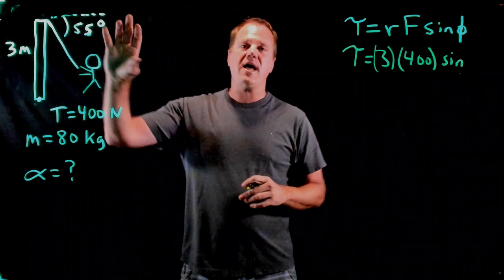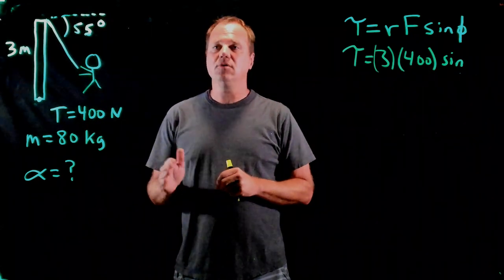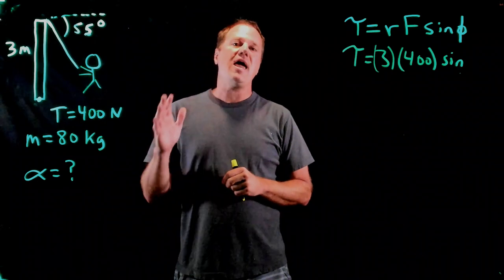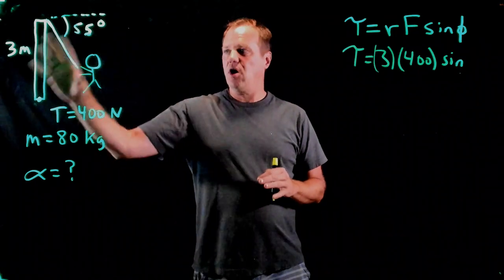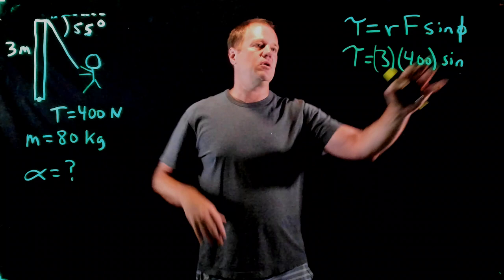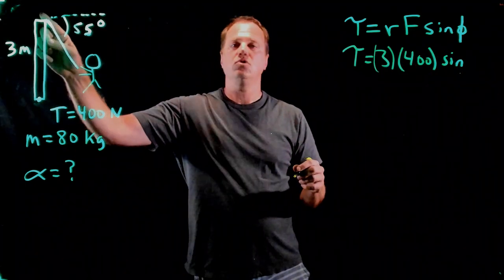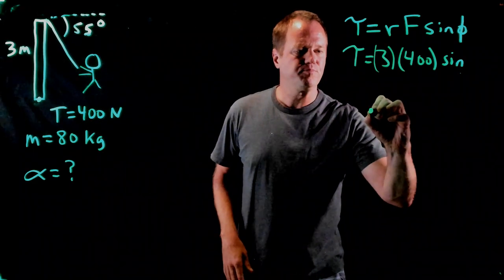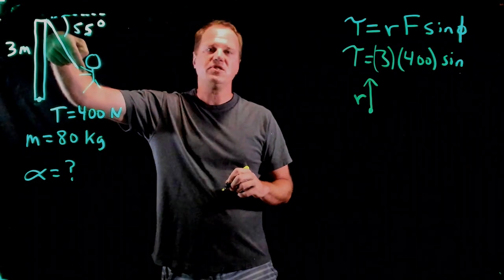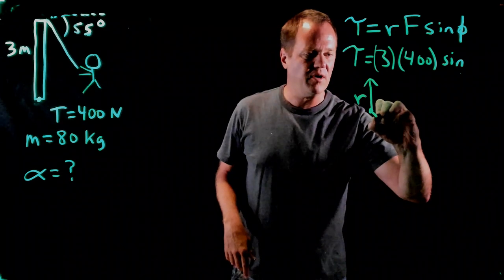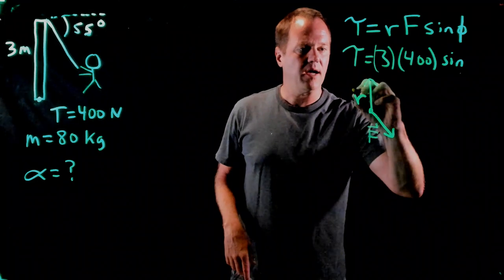Now, I intentionally drew this angle to be not the correct angle to put into this formula. We need the angle between the R vector and the force vector. So one thing I do in these types of problems is I redraw the R vector and the force vector, and then I determine this angle. So the R vector goes from the axis of rotation to where the force is exerted. So the R vector will point up. There's my R vector. And then my force vector points down 55 degrees below the positive x-axis.